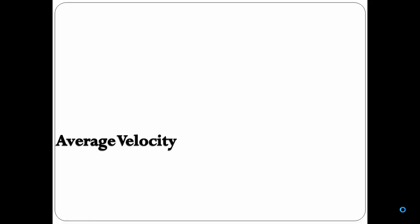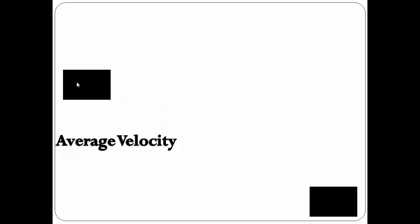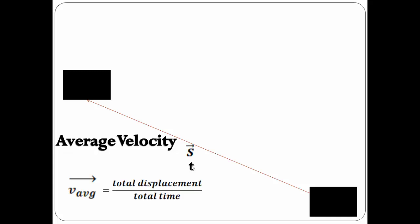The third one: average velocity. For any object moving with variable velocity, let this be the initial position and this be the final position after moving along a straight line and changing direction by 90 degrees. The total displacement will be denoted by S in total time T. Average velocity is calculated as total displacement upon total time, that is vector S upon T. You must keep in mind that you only find the distance between initial and final position.